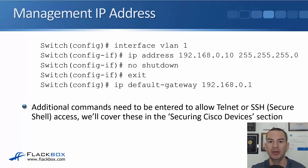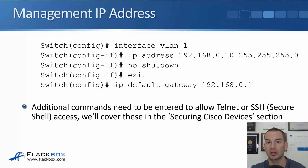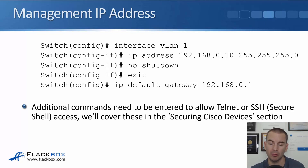It doesn't do any harm and it saves me having to think about whether I need to do a no shutdown or not — just always do it whenever you configure an interface, it saves you forgetting. Then we exit back to global configuration mode. To configure the default gateway, the command is 'IP default-gateway', and for our example that's 192.168.0.1. So that will give us IP connectivity on this switch and we'll be able to ping it and ping out from it as well.